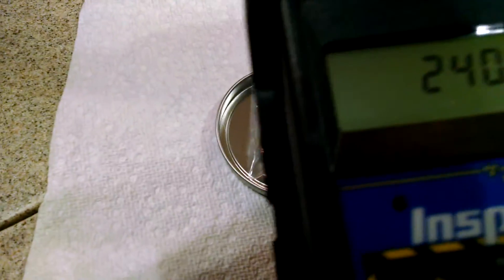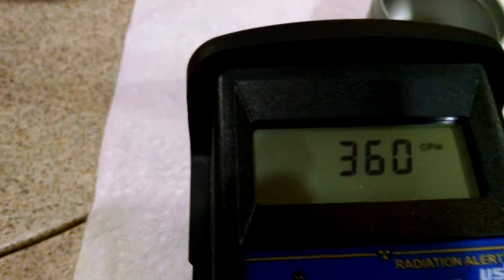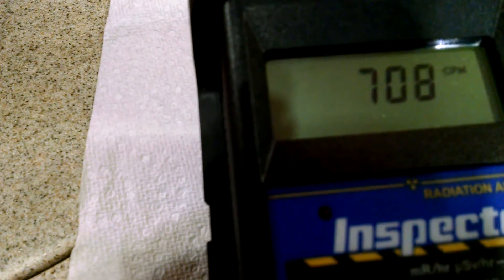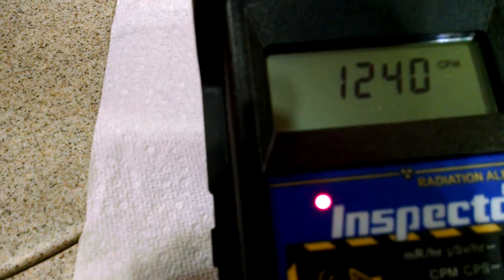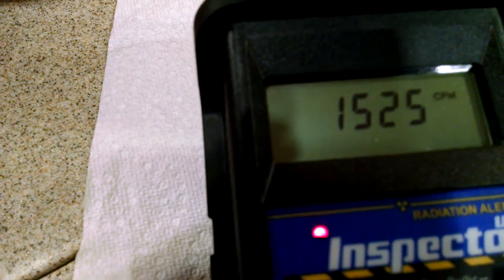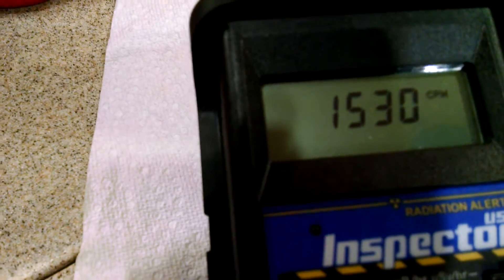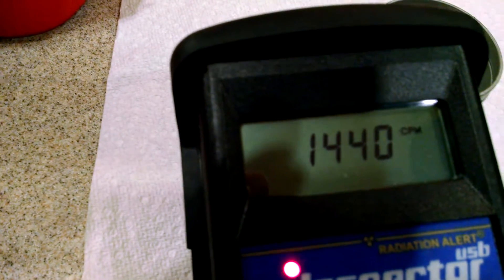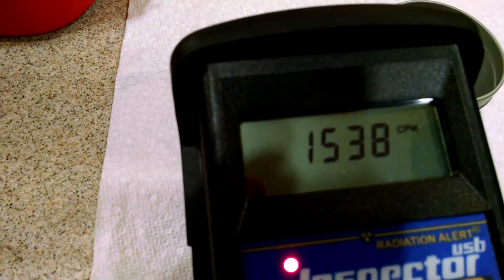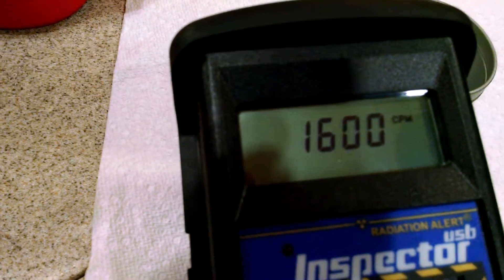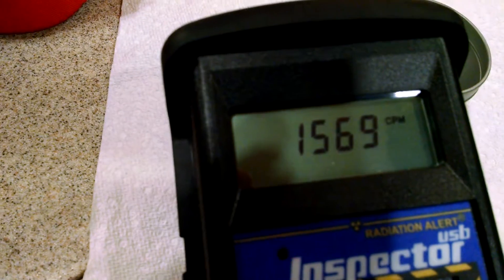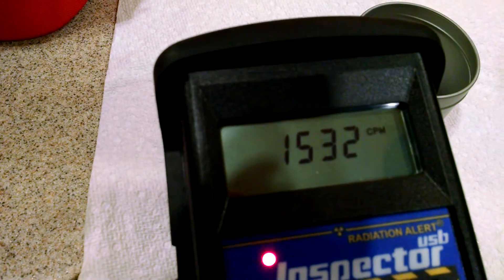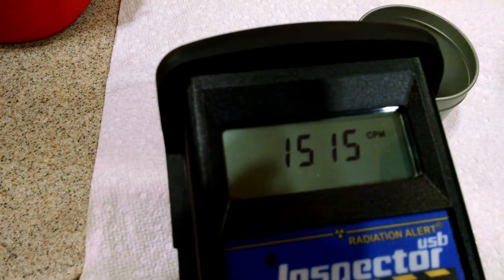I am going to show you. I have the shield on this Geiger counter closed right now, so the only thing that it is detecting is beta and gamma radiation coming off of this sample. And as you can see, the number is right around 1500 on average counts per minute.